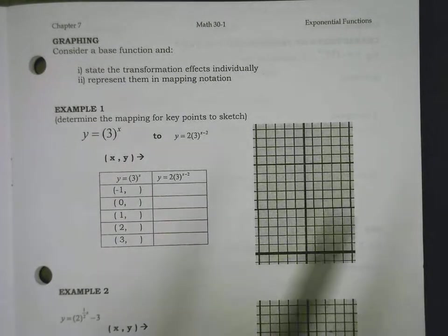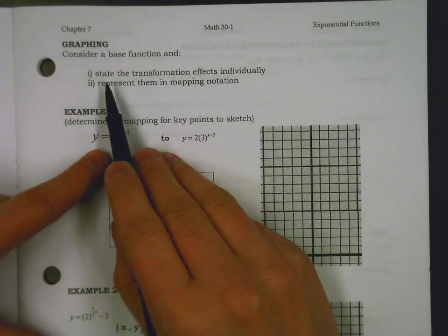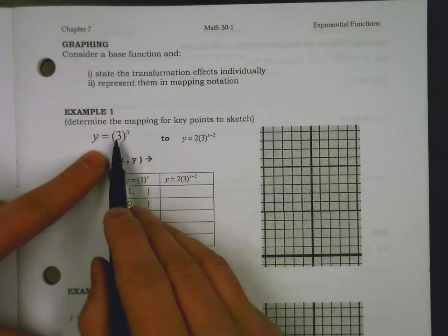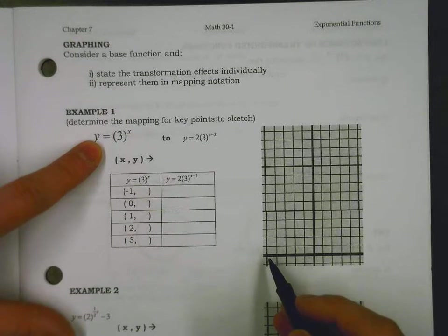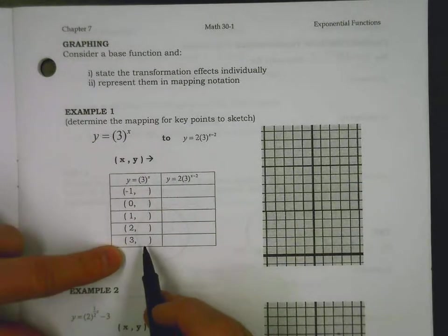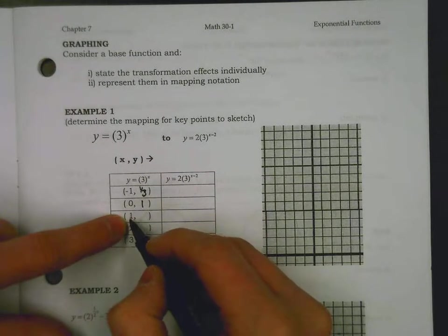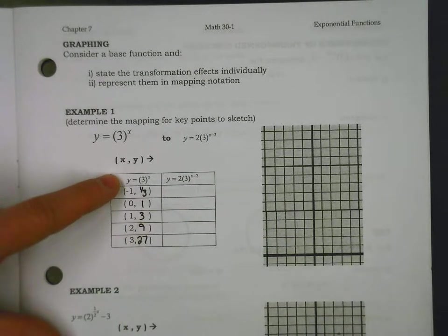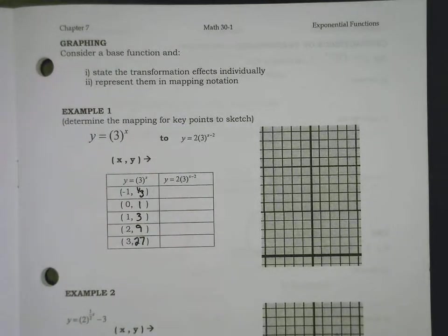So when we're graphing, we do have to first consider some base function, and I love to work with 2 to the power of x just because it's probably the simplest one we can deal with, but I get a little bit too used to that. And so it's important to maybe try something a little bit different. So what we're going to do is start with the transformation effects individually and represent them in mapping notation. So this time, I'm going to choose 3 to the power of x because we want to be able to do more than just 2 to the x, and this is its own very different function. So we're first going to consider what does 3 to the x look like? There are some points on this function. If you plug in a negative 1, a 1/3 comes out. If you plug in a 0, a 1 comes out. 3 to the 1 is a 3, 3 squared is a 9, 3 cubed is a 27. And we could have gone further, but I think this gives us a decent idea of what we're dealing with.